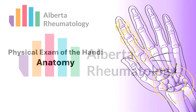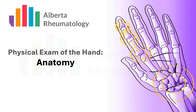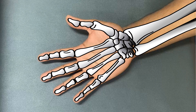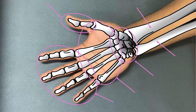In this video series we will demonstrate the components of a rheumatology exam of the wrist and hand, beginning with a brief overview of anatomy. There are a number of important bony structures including the radius and ulna of the forearm, eight carpal bones, five metacarpal bones, and fourteen phalanges — two of which are in the thumb.